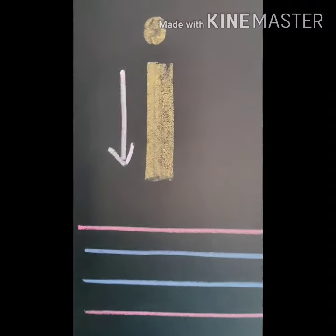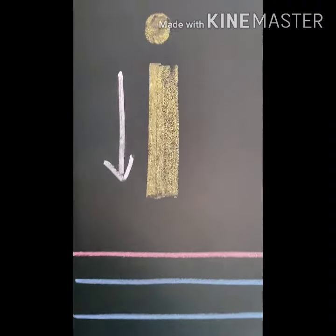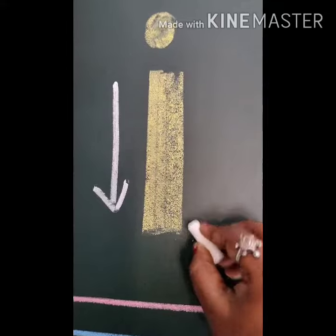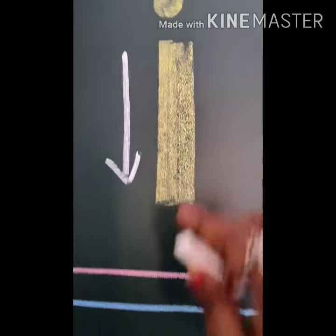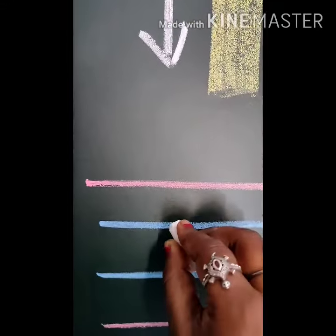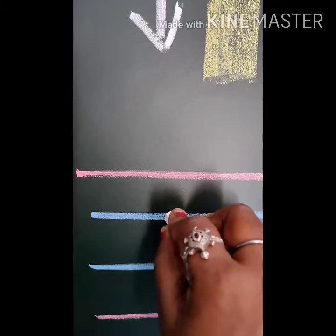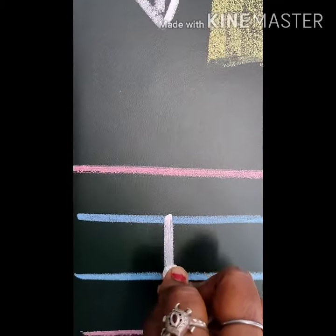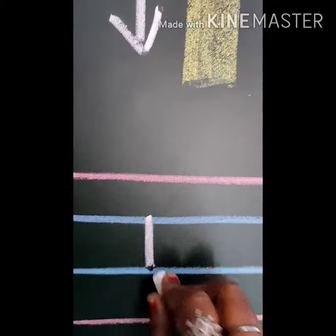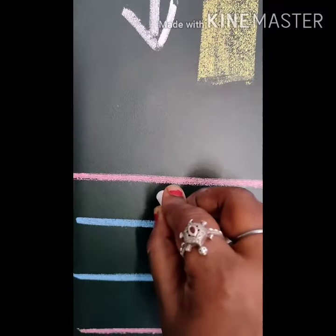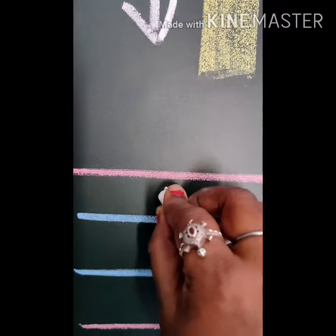Formation of letter i: standing line, then a dot. Let's practice. In between two lines — standing line and dot.